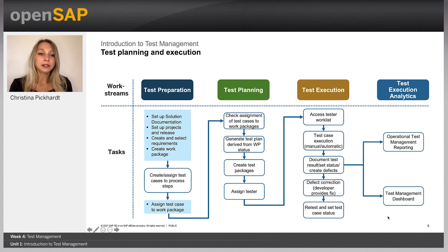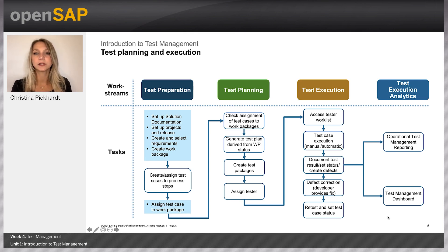In parallel with test execution and afterwards, different types of analytics can be run — for example, to see the test status and test progress. At the end of a test execution phase, a test report should be created and stored in the archive.